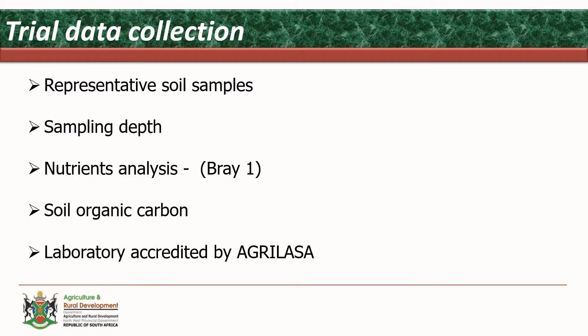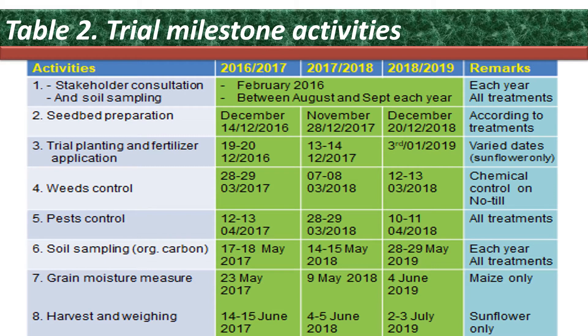Under the experiment, data was collected and soil samples were taken as representative samples. Topsoil was collected at a depth of 0 to 300 millimeters, followed by subsoil collection at 300 to 600 millimeters. The analysis was done using the PREI-1 method, and soil organic carbon was measured using soil bulk density. The results were analyzed in an accredited laboratory.